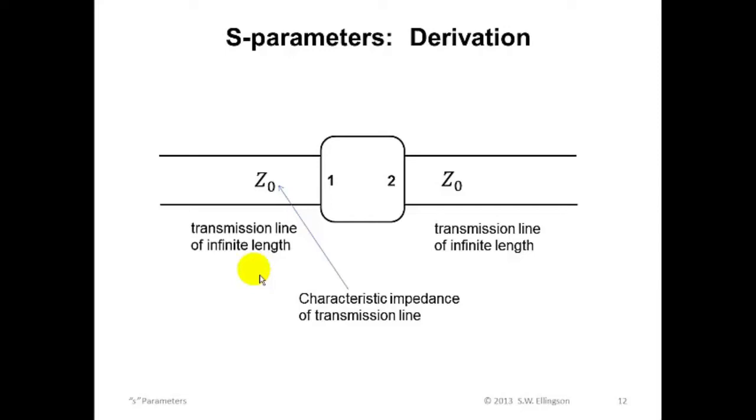The figure shown here is a two-port device in which the two ports are accessed using transmission lines. And these transmission lines have a characteristic impedance which will give the variable Z0 or Z-naught. We'll assume that Z0 is real valued since this will be the case for any practical transmission line that we might encounter.